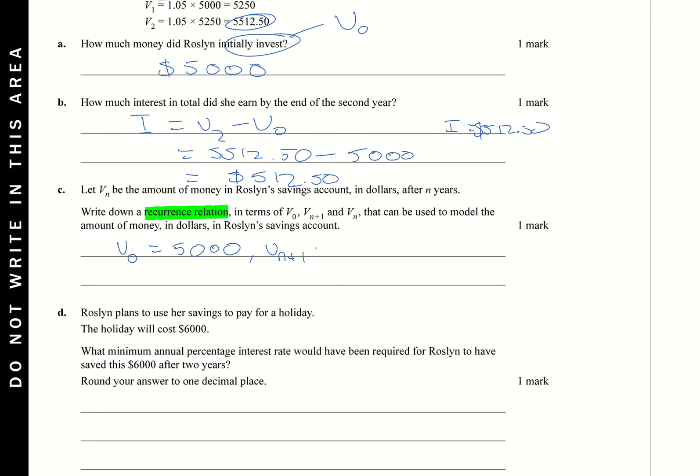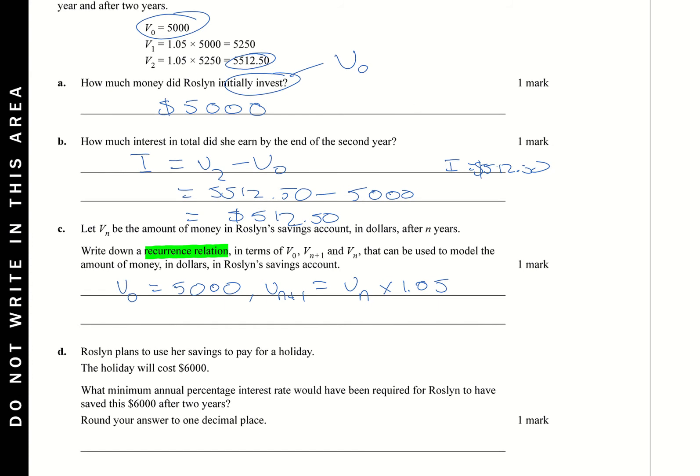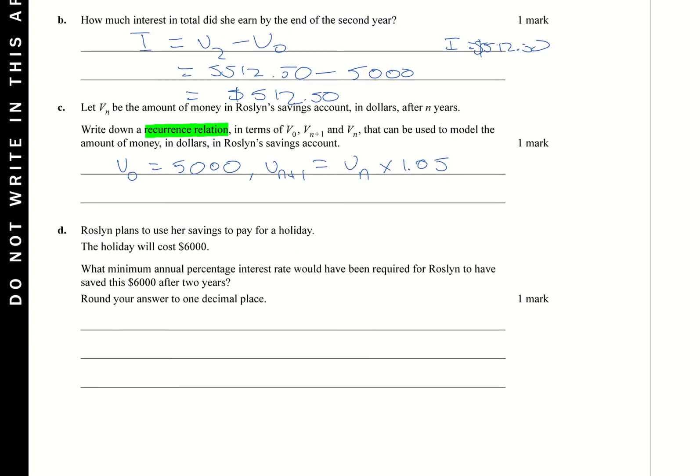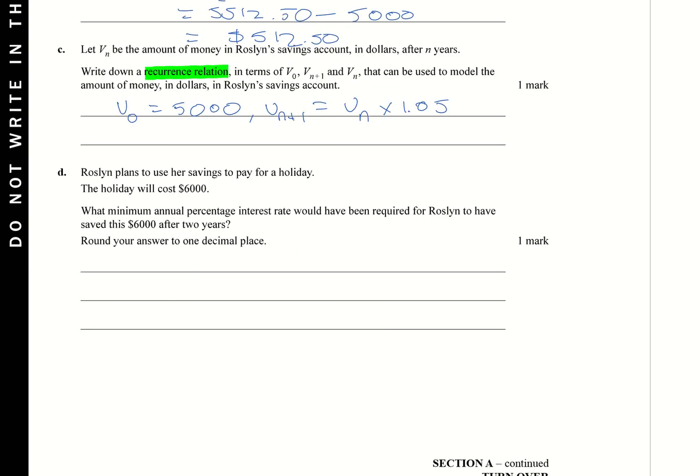VN, that's a recurrent term if you want to call it that, equals VN, because that's what the VN term would be, times 1.05. We can actually see that up here, what that would be. But that's how you could sort of show that calculation there. All right. So that's what you're after in terms of that recurrence relation.